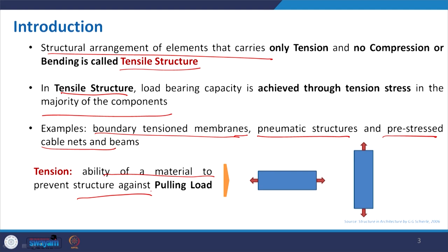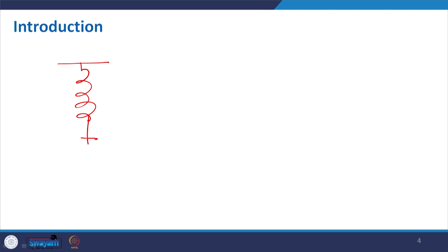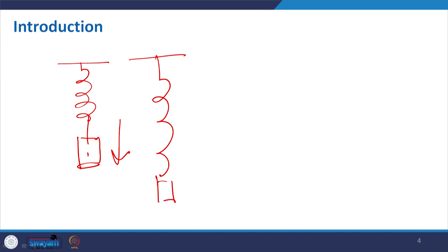Tension is basically the ability of a material to resist pulling load. In comparison to compression which is pushing, tension is basically the pulling force acting on the main axis. When you pull a spring and add load, it will try to expand and you will see that it is elongated — this is the tensile stress developed within the material.